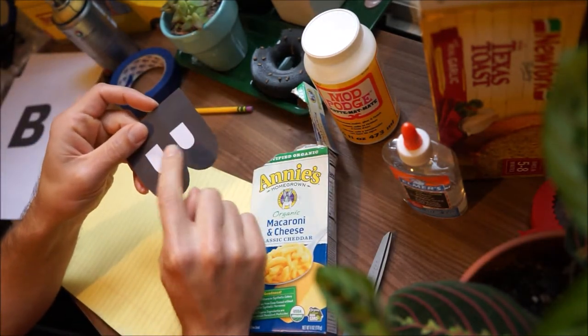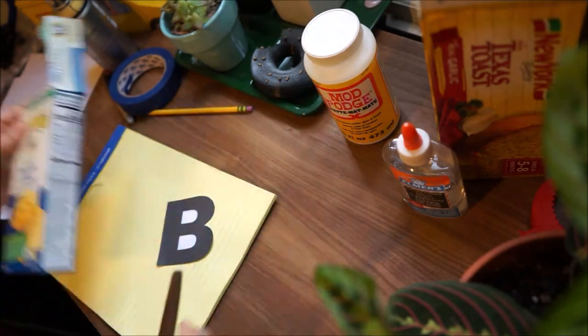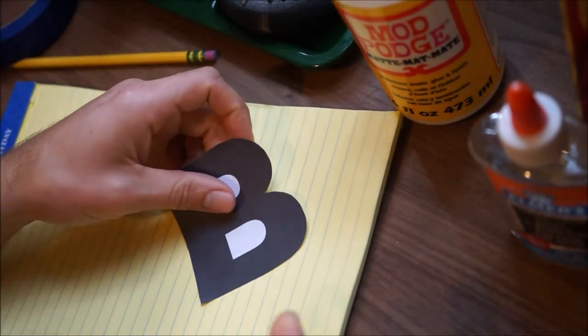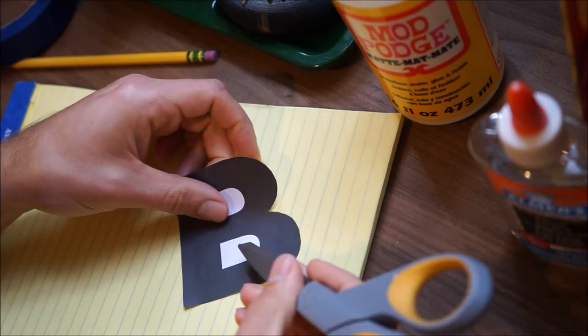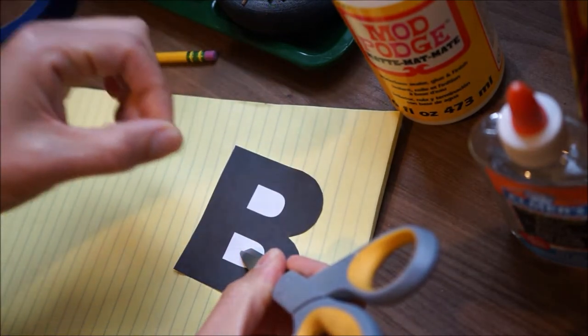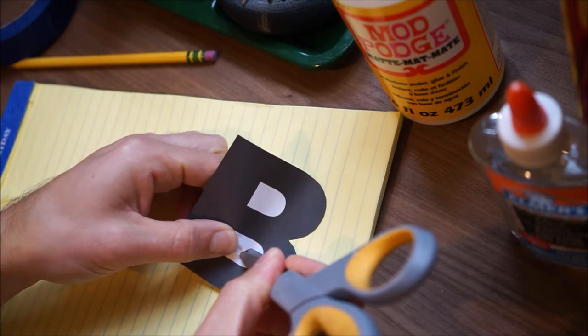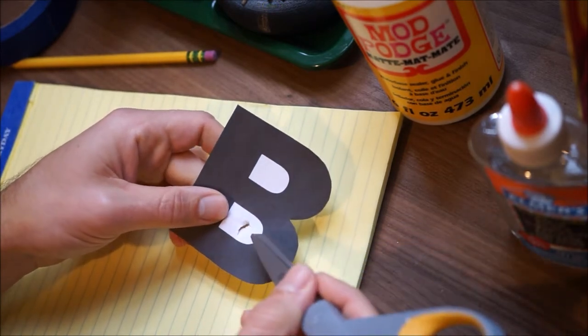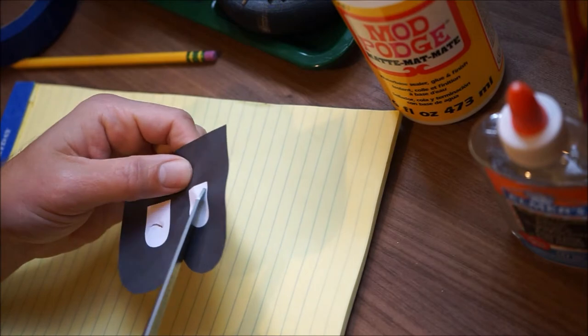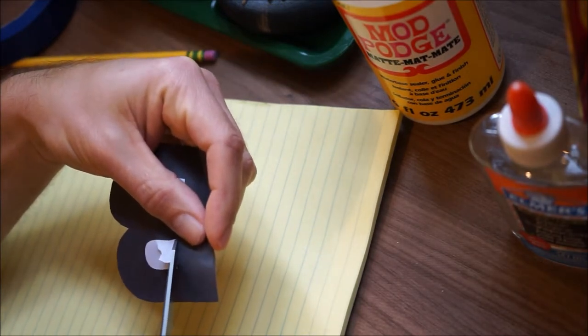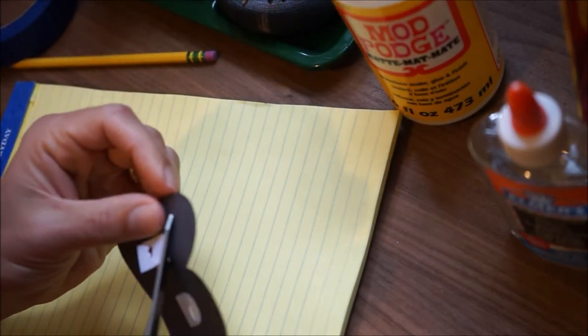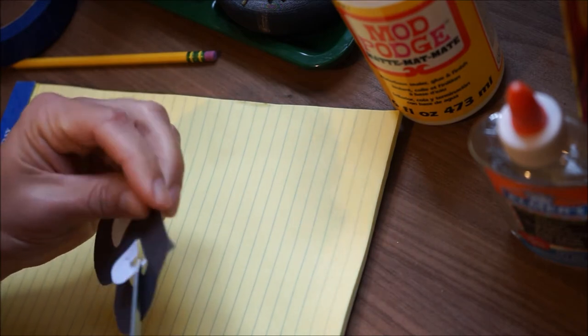When you cut out your B, the inside of the B, the little holes, the two holes inside the capital B need to be cut out, and there's a special way that we can do this. Basically, we carefully take our pad of paper, put it under our B. We take the tip of our scissors, put it on top of the space we want to cut out, and then we're going to carefully pull up on the B. Do not stab into the paper with the scissors. Leave the scissors on the pad of paper on top of the B, then pull the B up and it tears a little bit of a hole.